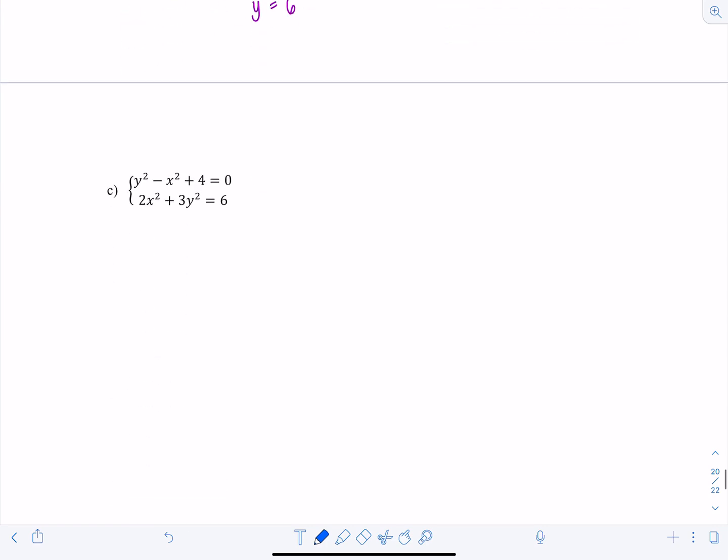Moving on. We have y squared minus x squared plus 4 equals 0, and then 2x squared plus 3y squared equals 6. So again, we can use substitution or you could do elimination in this case if you wanted. So let me show you elimination just to spice things up.